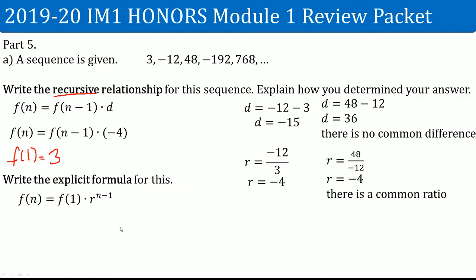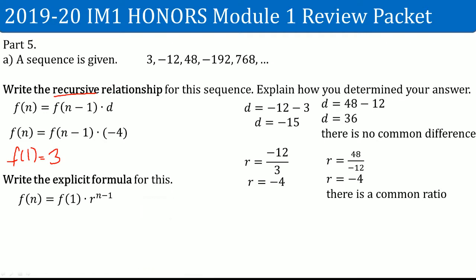Now write out the explicit formula. Because this is geometric with a common ratio, we use the first-term explicit formula for geometric sequences. This is considered the first-term form because of the exponent of n minus 1. Substituting in the first term of 3 and r equals negative 4, that would be your complete answer: f(n) = 3 · (-4)^(n-1).